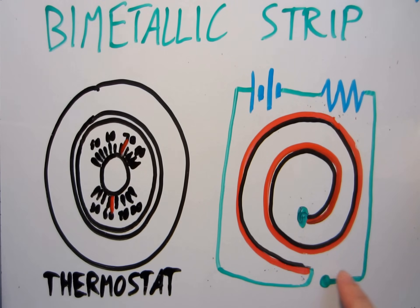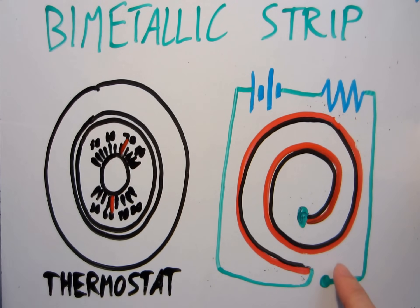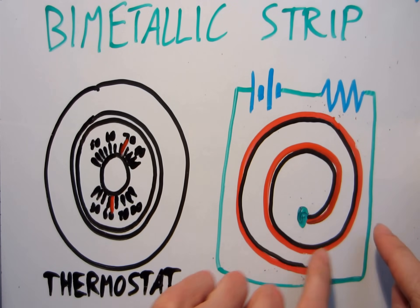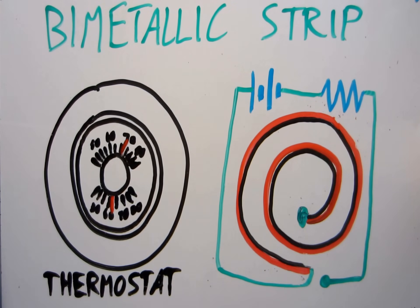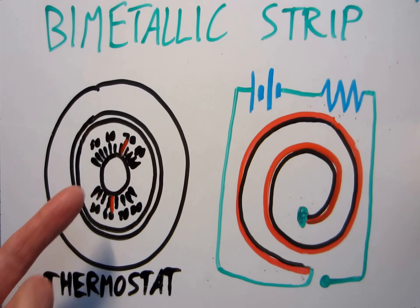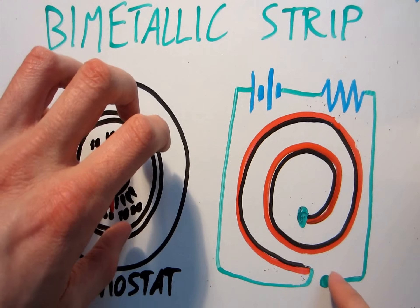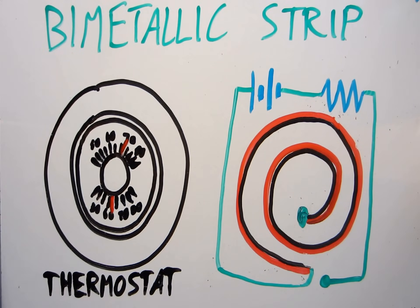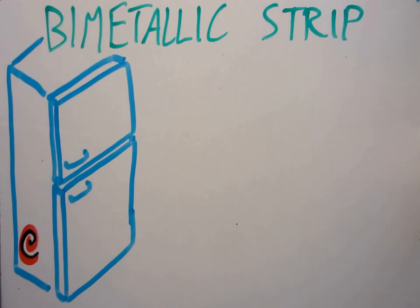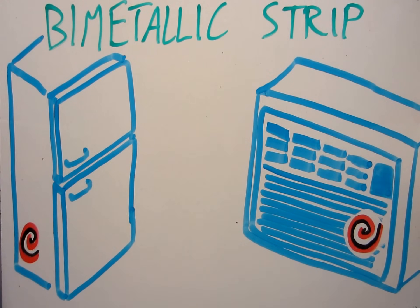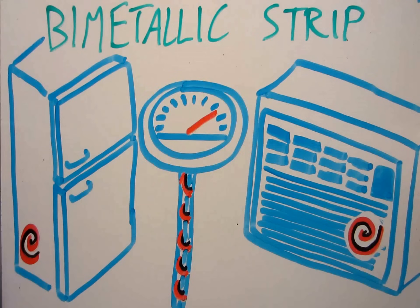If we add in the ability to rotate this contact point around, we can change what temperature your heater will turn on at. And this is how we end up with the interface you're probably used to on your home thermostat. The same coiled bimetallic strips are also used to regulate fridges, air conditioners, and even those little dial thermometers you might have used at your last barbecue.